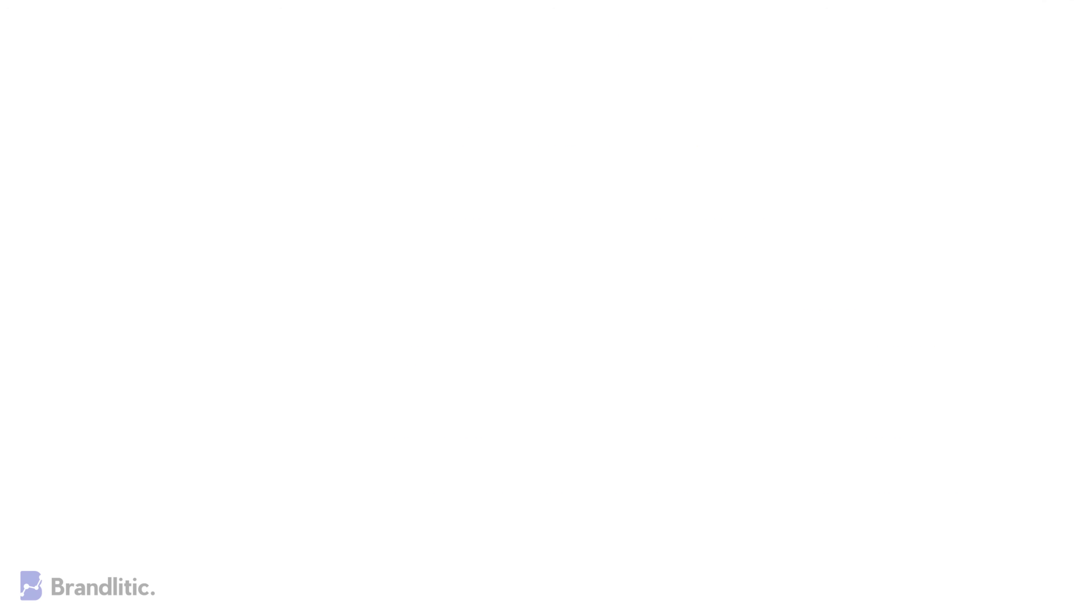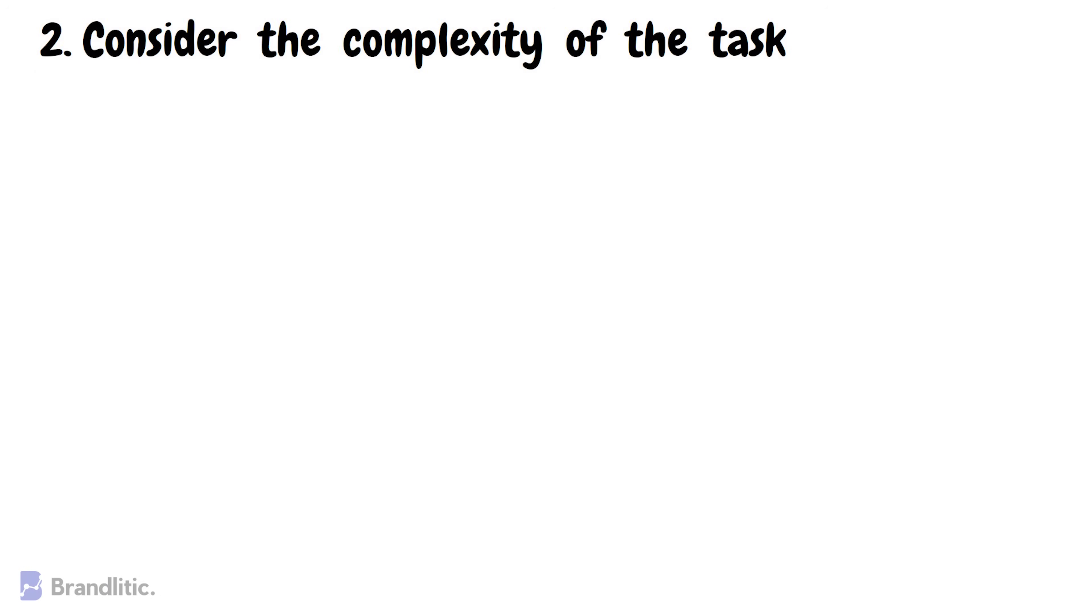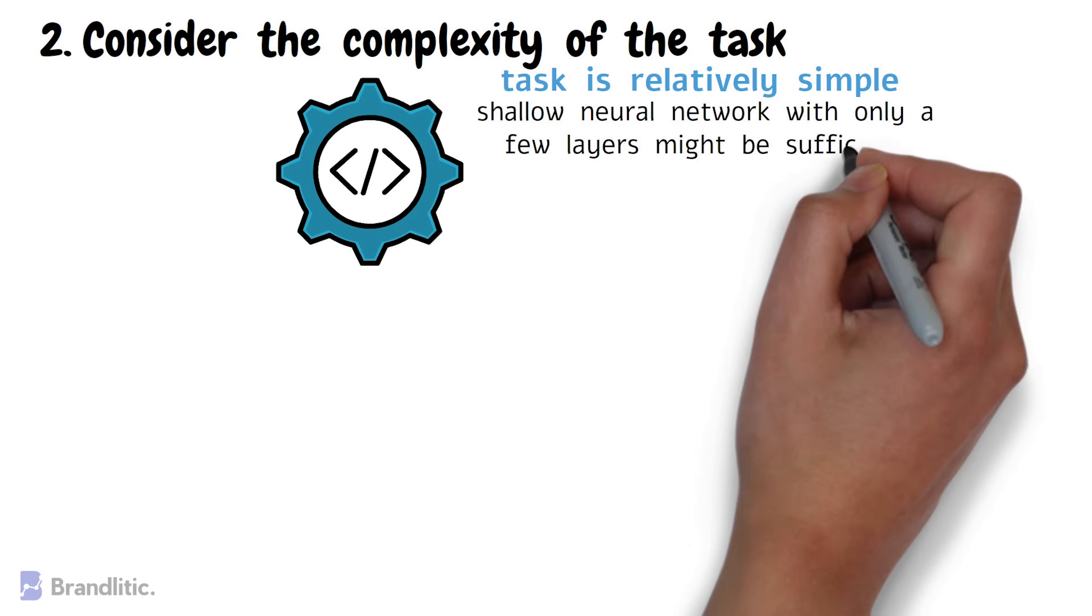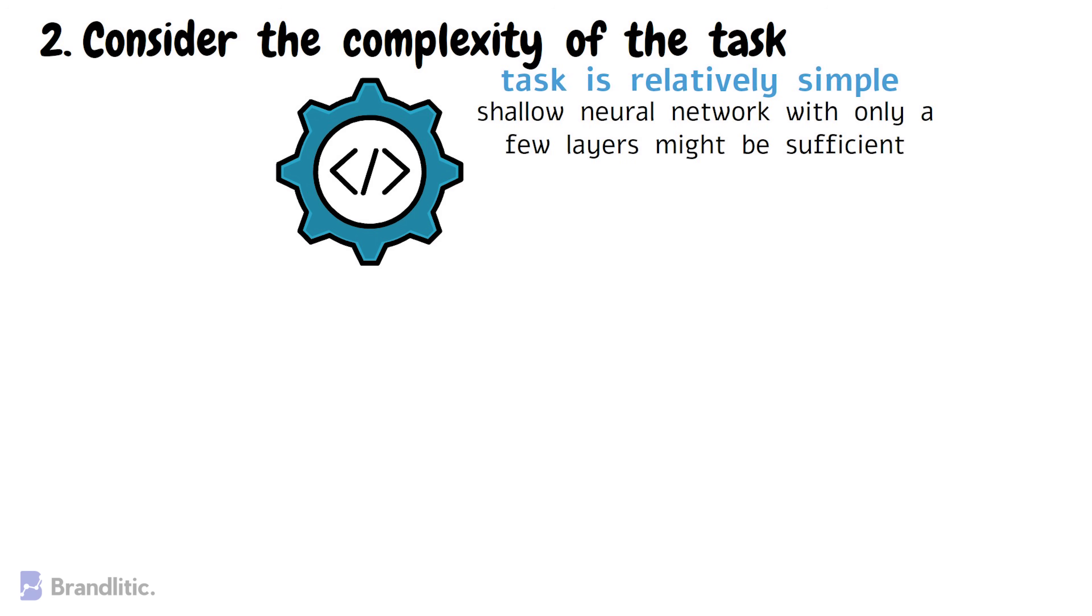Number two, consider the complexity of the task. The complexity of the task at hand is another critical factor to consider when choosing a neural network. If the task is relatively simple, a shallow neural network with only a few layers might be sufficient.